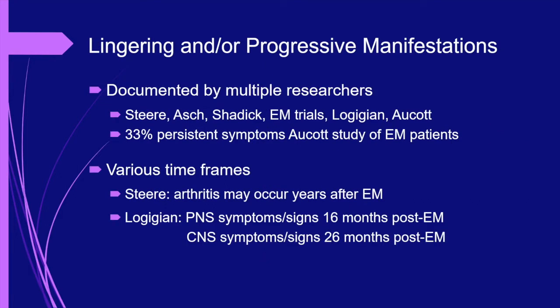The occurrence of persistent manifestations is well documented in the literature. Steer and colleagues identified persistent symptomatology in the early years of the disease, before therapeutic managements were well established. But even now, we find that a substantial number of patients remain symptomatic long after therapy has ended. Aucott's 2013 study found that a third of his EM patients treated with 21 days of doxycycline were still symptomatic six months out from treatment. For many patients with persistent Lyme disease, their current symptoms are a continuation of their original symptoms; for others, there can be a substantial lag time.